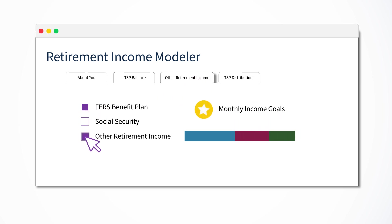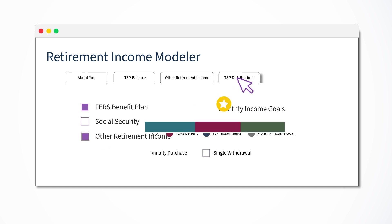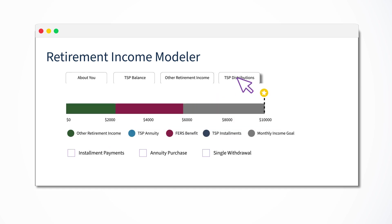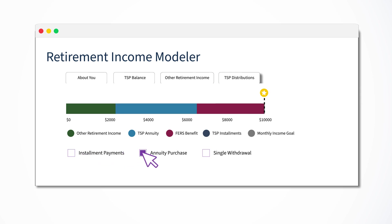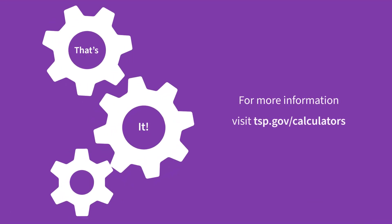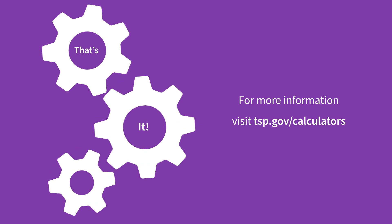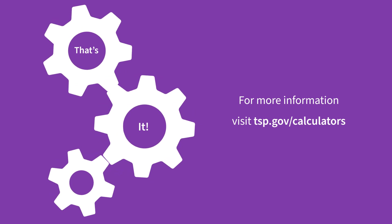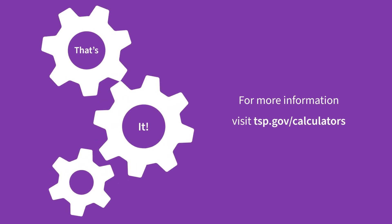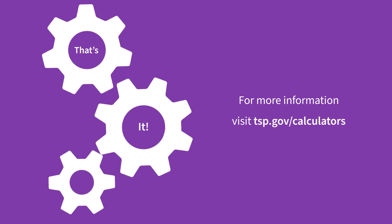On the TSP Distributions tab, as you model distributions from your TSP account, you'll see them fill the gap on the monthly income bar chart. That's it. For more information, visit TSP.gov/calculators.